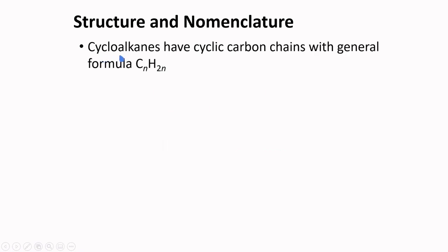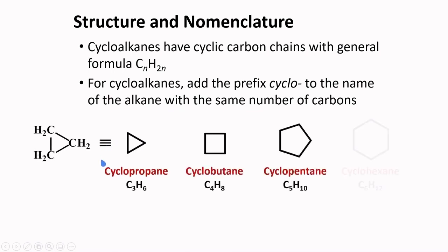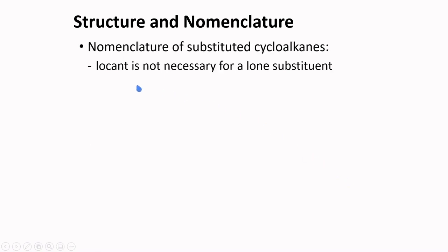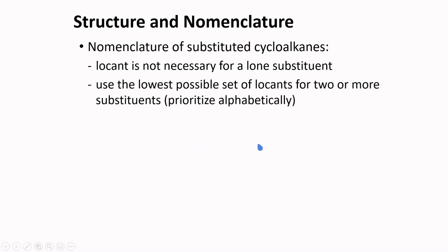Moving on to cycloalkanes: cycloalkanes have cyclic carbon chains with the general formula CnH2n — that is, two fewer hydrogens compared to the linear alkane. To name cycloalkanes, add the prefix 'cyclo' to the name of the alkane with the same number of carbons: cyclopropane for 3 carbons, cyclobutane for 4, cyclopentane for 5, and cyclohexane for 6. If there are two or more substituents, use the lowest possible set of locants and prioritize substituents alphabetically.